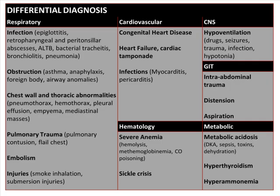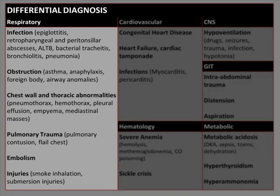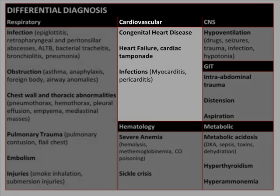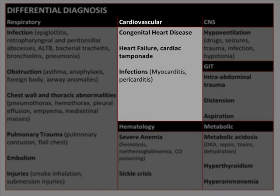Disorders in any system can cause respiratory compromise. Respiratory causes include infections, obstruction, chest wall and thoracic abnormalities, trauma, embolism, and injuries. Cardiovascular causes include congenital heart disease, heart failure, cardiac tamponade, and infections.